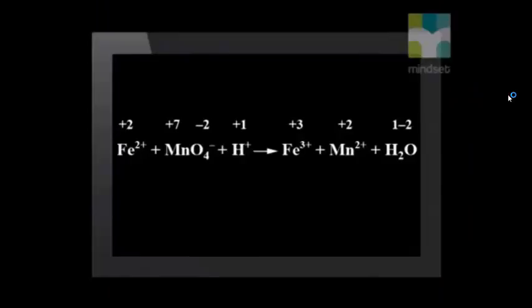Now that we have worked out all the oxidation numbers, we can identify the changes in oxidation numbers. We see that the oxidation number of iron changes from +2 to +3. If the oxidation number increases, the process is oxidation. So we can use this information to write the oxidation half reaction.